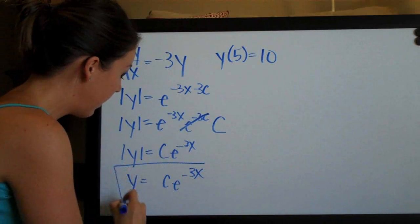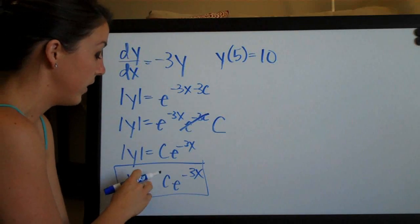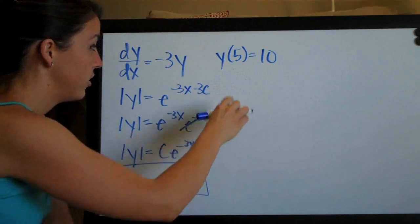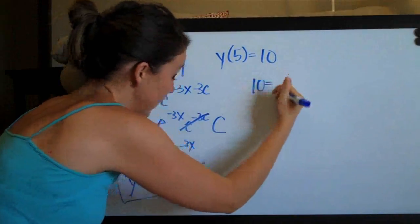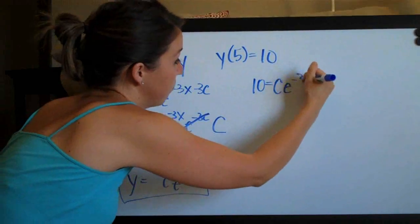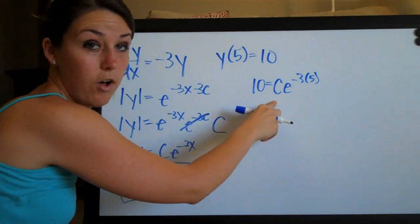So we've gone ahead and solved for y. This is our function. Now that we've done this, we can go ahead and plug in our initial condition, 5 for x and 10 for y. So we'll get 10 equals c e to the negative 3 times 5. The purpose of doing this is eventually to solve for c.